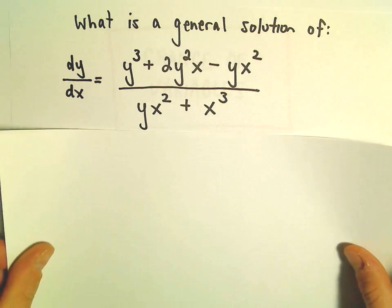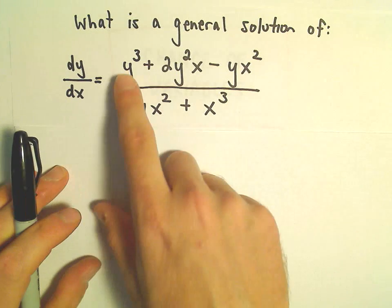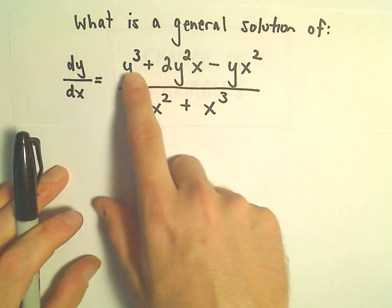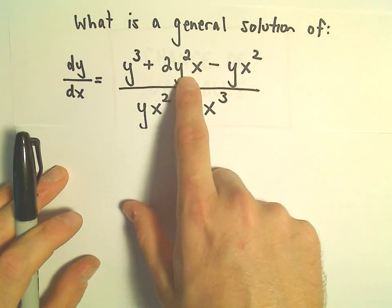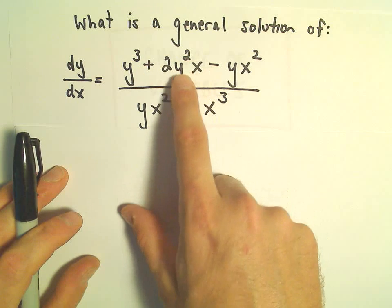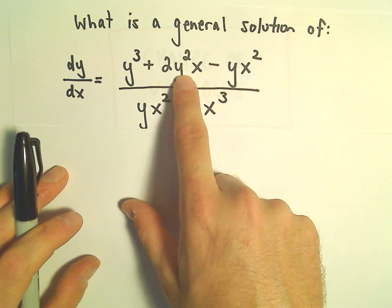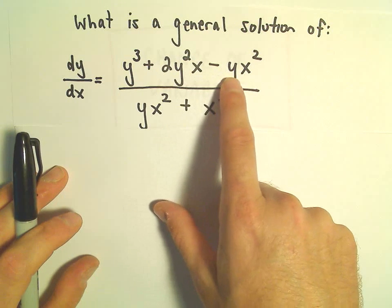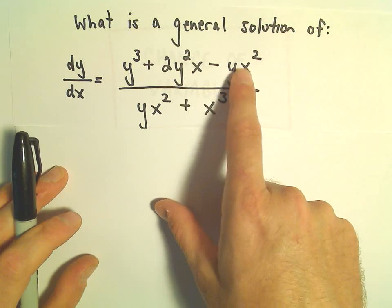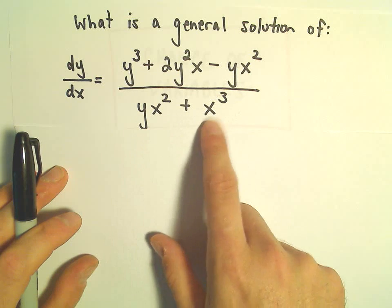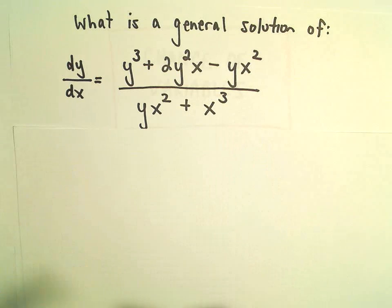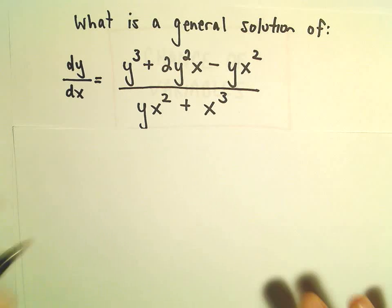Notice all the terms in this case have degree three. y³ has degree three, y²x has degree three, y·x² has degree three, and x³ clearly has degree three as well.